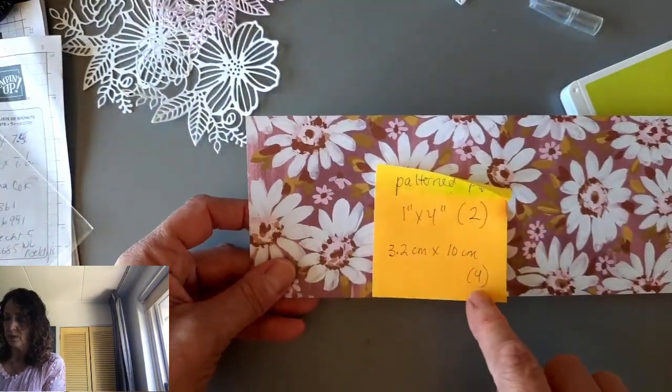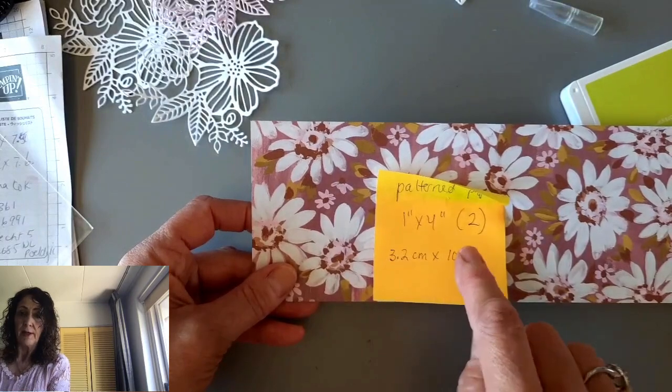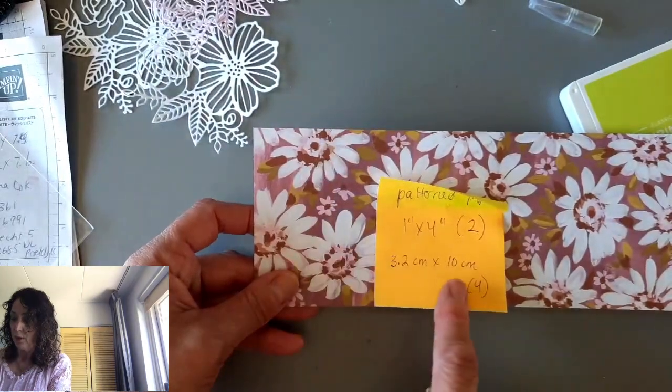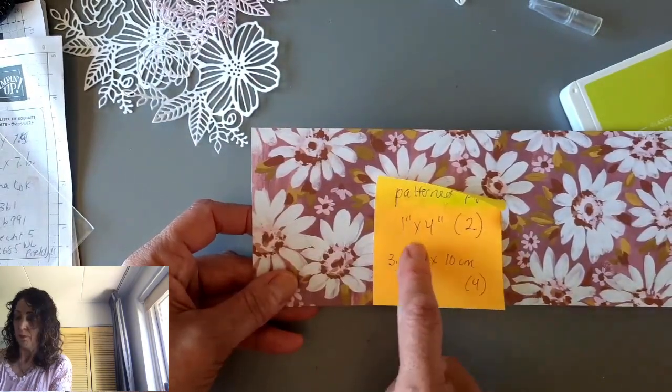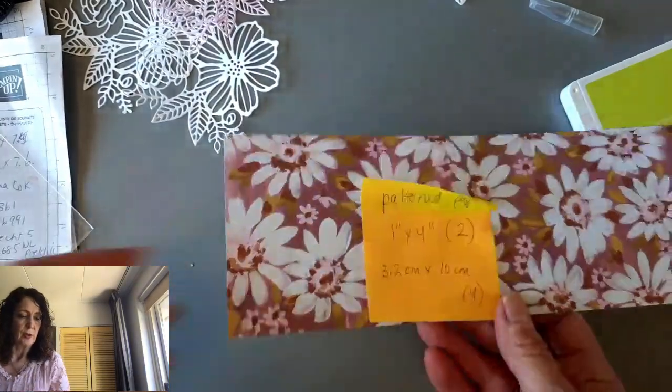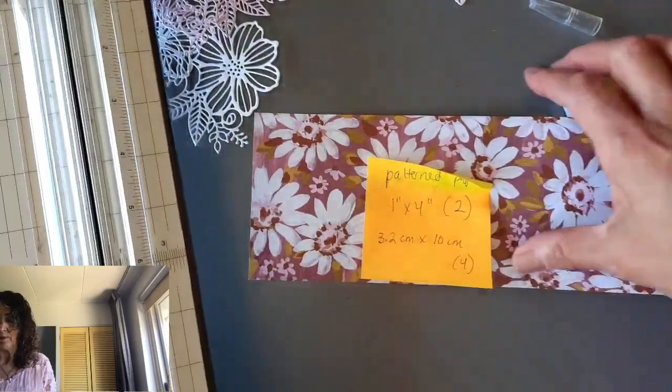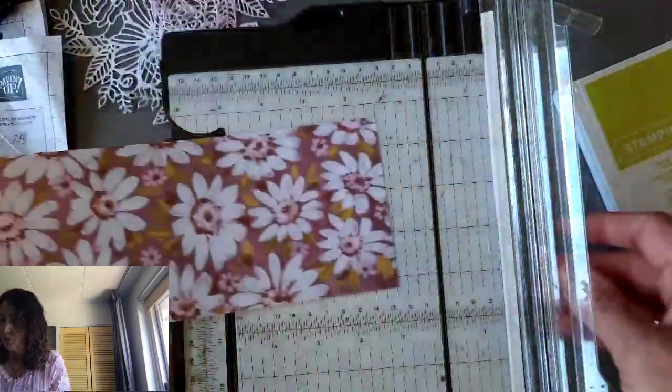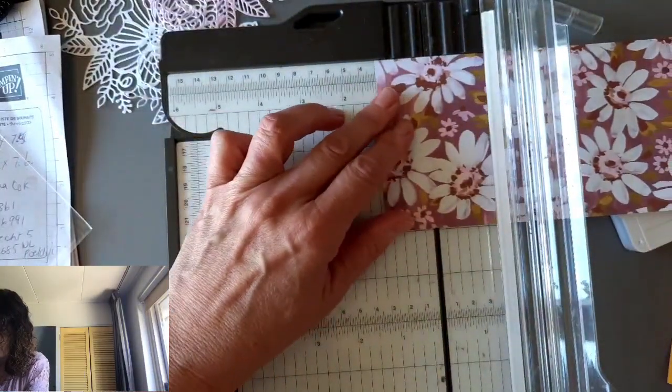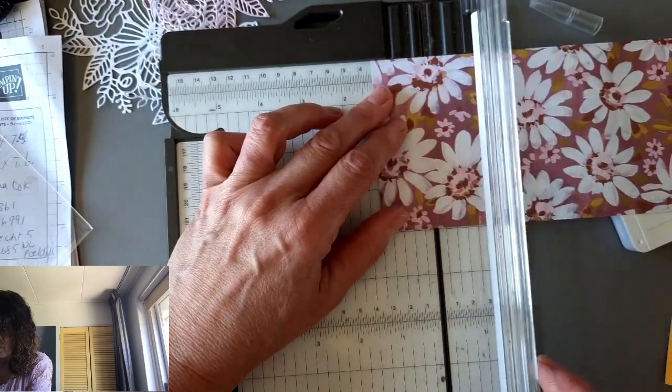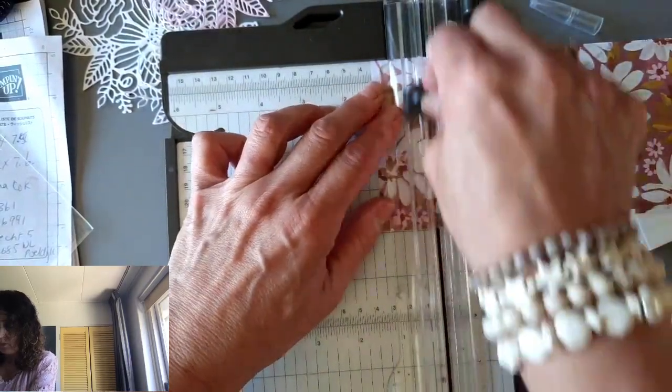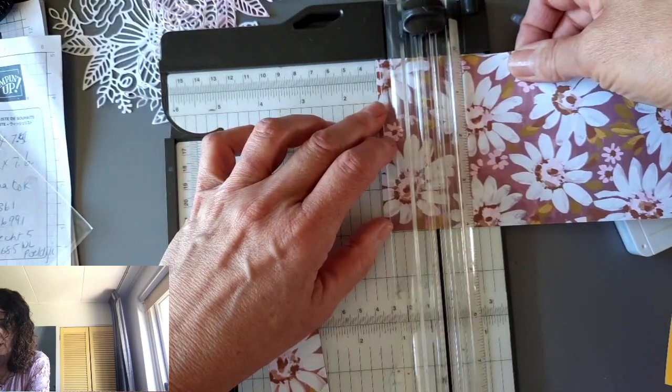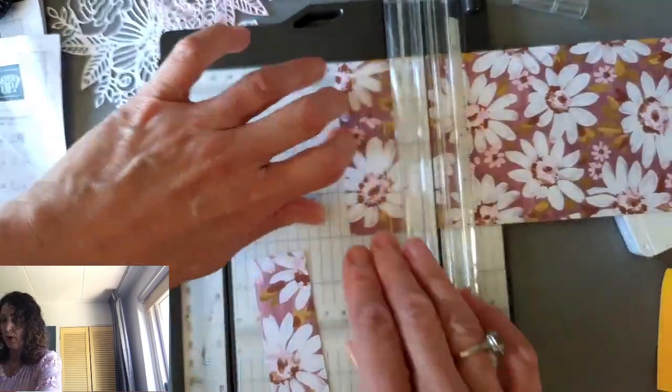Then we're going to take our pattern paper, and we need four pieces. In Beverly's video it said two. Then I saw later on that she had four. So this is 10 centimeters, or four inches. And I want to cut them at 3.2 centimeters. If you're using inches, you're going to just cut one inch strips. So let's do that. And I also like the idea that they are going to be beside each other. So it was 3.2 centimeters.